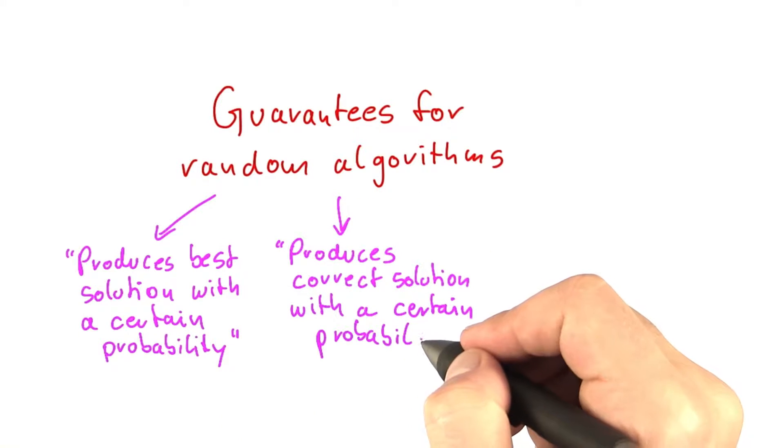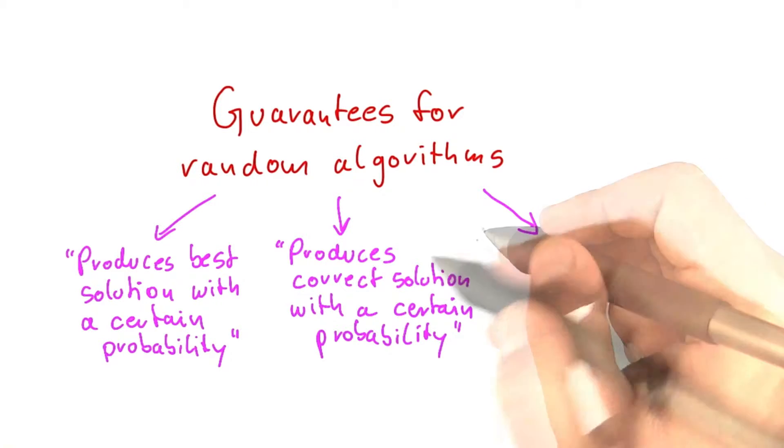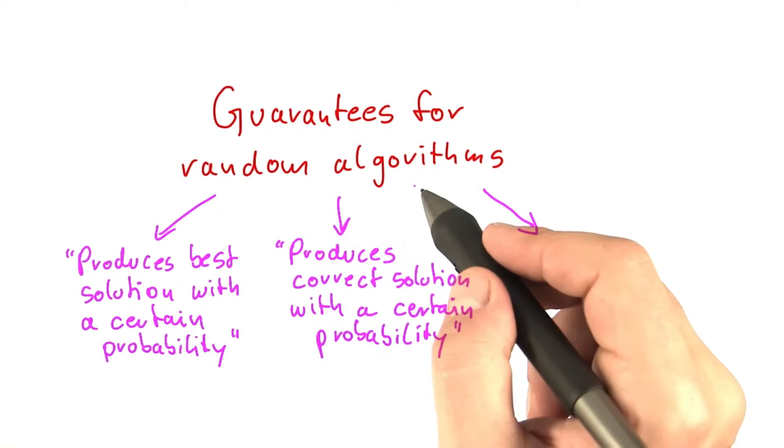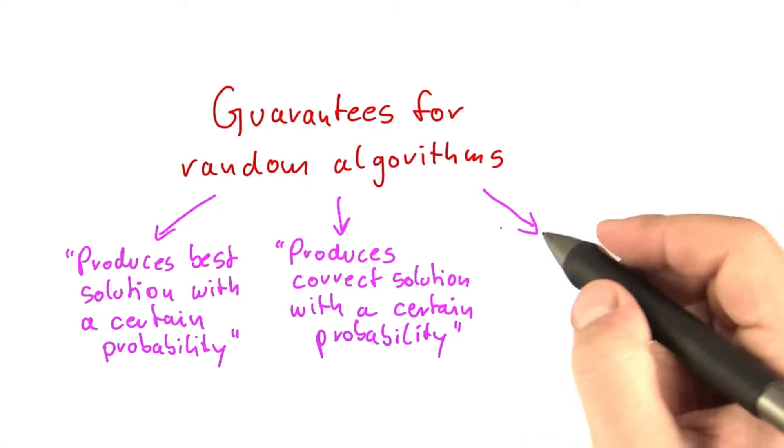And so we'll also write this down for decision problems. And finally, we could also say that the algorithm has a running time that is random, and we want the running time to be polynomial with a certain probability.